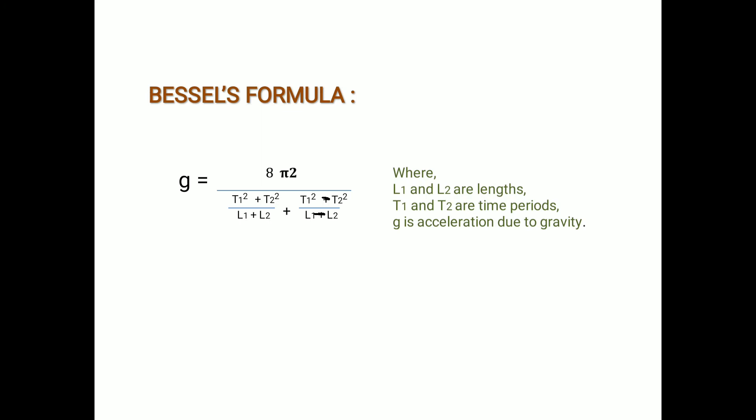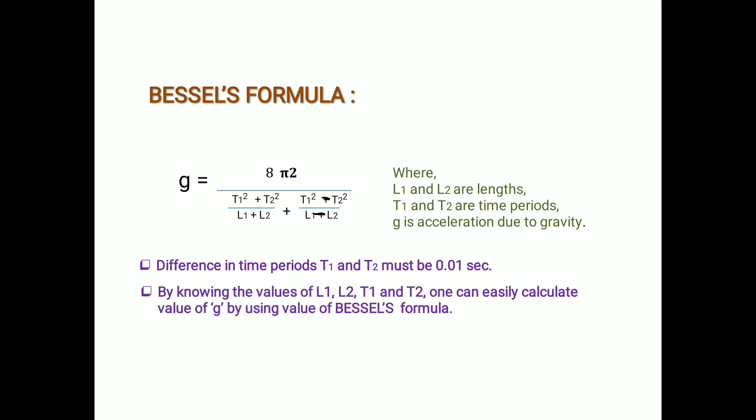Wherever we want the accurate value of gravitational acceleration, we perform this Kater's compound pendulum experiment and get the accurate value using Bessel's formula. Note that the difference between T1 and T2 must be 0.01 second — if the difference is larger, the experiment results will be incorrect. By knowing L1, L2, T1, and T2, one can easily calculate the value of g using Kater's reversible pendulum.